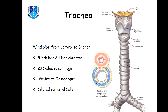The trachea starts below the larynx and ends on the bronchi — the right bronchus and the left bronchus. It is also called a windpipe. It is approximately 5 inches in length and about 1 inch in diameter. It is made up of smooth muscles, fibrous tissues, and C-shaped cartilage.